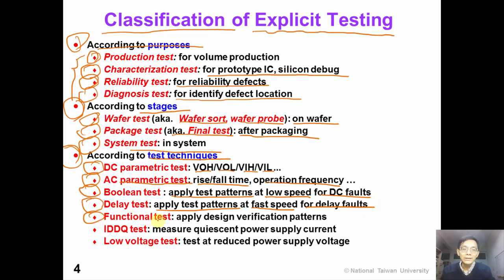Functional tests apply design verification patterns to operate the ICs in functional mode. IDDQ test measures the quiescent power supply current of the ICs. And finally, low voltage test tests the circuit at a reduced power supply voltage. All of these tests are applied using different test techniques.